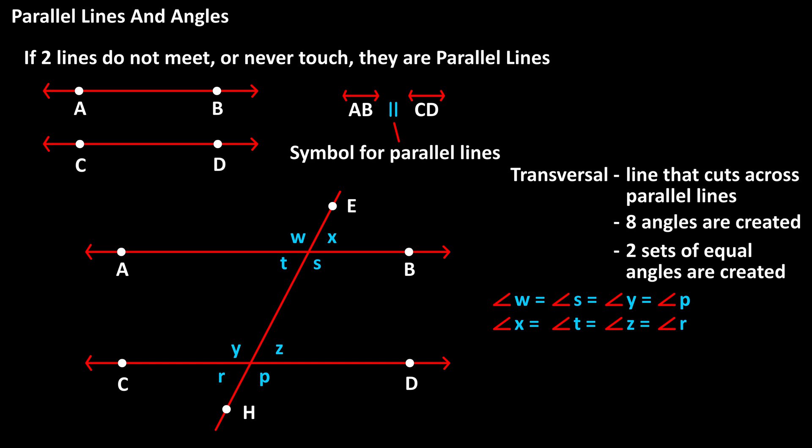Now, if we know the measurement of one of the eight angles, we can find the measurement of the other seven angles. For instance, if angle Y equals 115 degrees, then we know that angles W, S, and P are also 115 degrees.